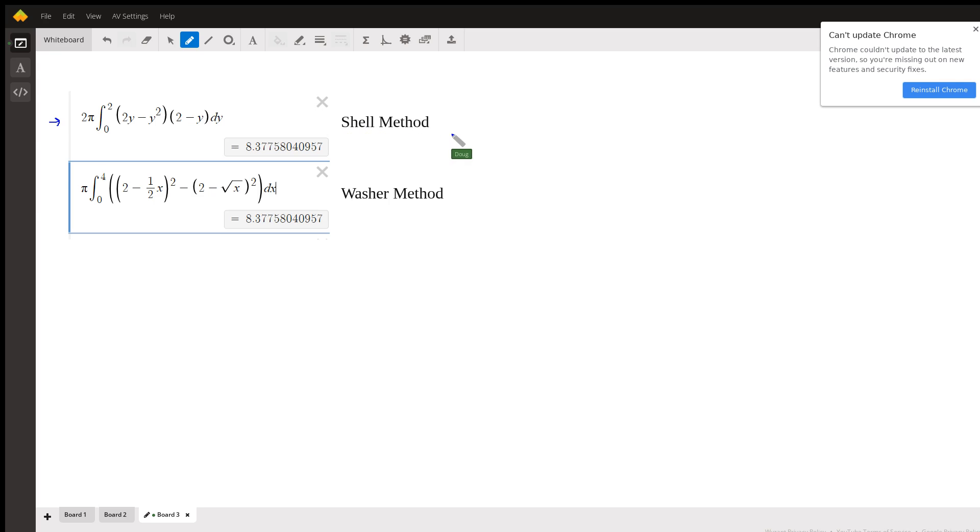If I set up the definite integral using the shell method, I get the same answer as if I use the washer method. Now what is the washer method? Well, it's pi times the definite integral from zero to four of the outer radius.